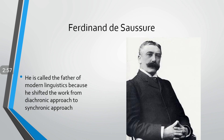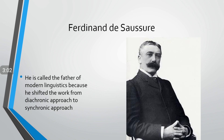Ferdinand de Saussure is called the father of modern linguistics because he shifted the work from a diachronic approach to a synchronic approach. According to Ferdinand de Saussure, we should not go back into history to find out the similarities and differences of any code or language. According to his idea, we need to be in the present time to explore the similarities and differences of the same code which is in practice in different parts of the world.